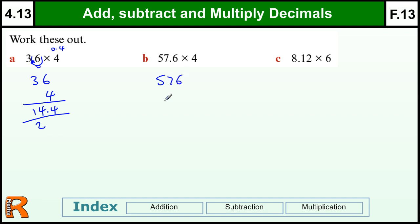Again, 57.6 times four, ignore the decimal point, six fours of twenty-four, carry two, seven fours of twenty-eight plus two is thirty, carry three, five fours of twenty plus three is twenty-three, and we have one decimal place in our question, we need to put one decimal place in the answer, so it's going to be 230.4.